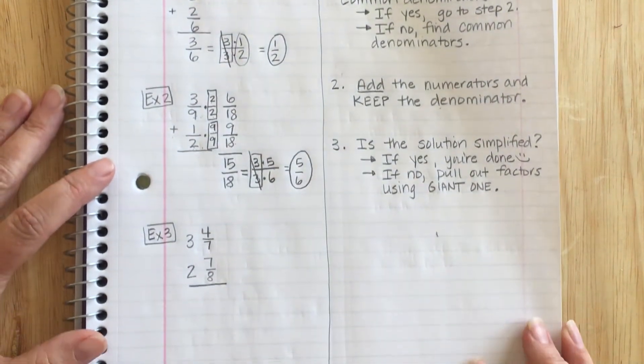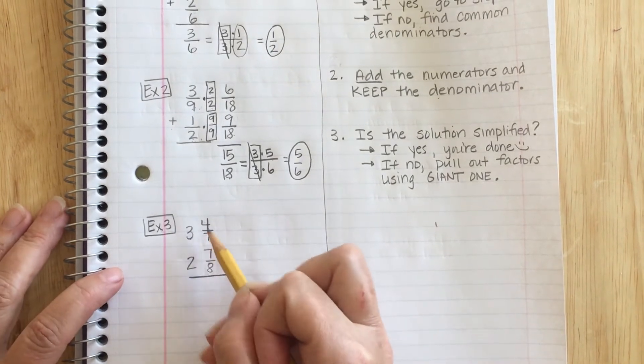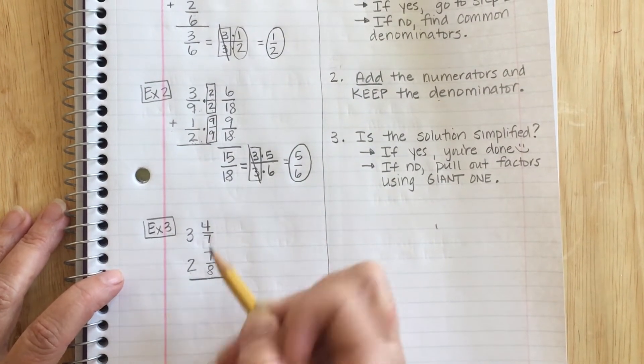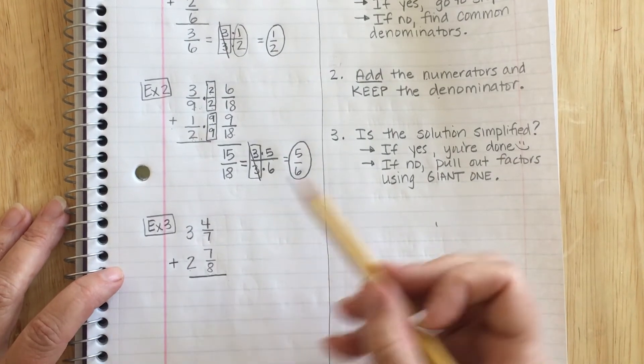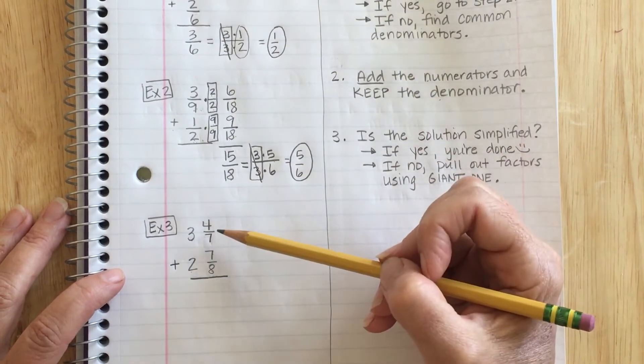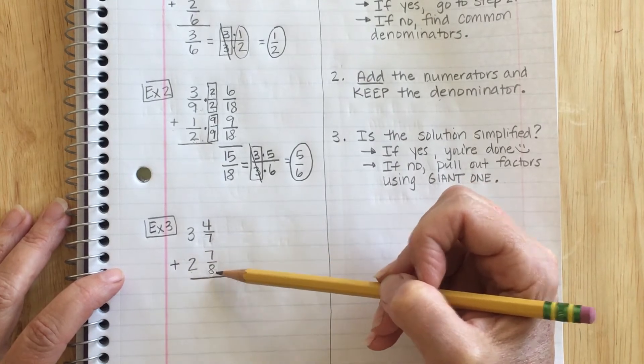Let's go ahead and go on to example 3. In number 3, I have 3 and 4/7 plus 2 and 7/8. And I'm going to add these two numbers. I take a look. My first step is to look for common denominators. I notice I have 7 and 8. They are not common.